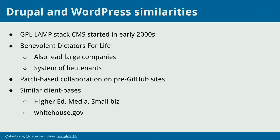Many of the fundamentals on WordPress island are very similar to Drupal island: GPL, LAMP stack, CMS started in the early 2000s, led by the Benevolent Dictator for Life who also leads the major company in the ecosystem — Dries with Acquia, Matt Mullenweg with Automattic. They also distribute power through a system of lieutenants, have patch-based collaboration on pre-GitHub sites like WordPress.org and Drupal.org, serve similar client bases like higher ed, media, and small businesses. Both CMSs can even claim WhiteHouse.gov at some point in time.